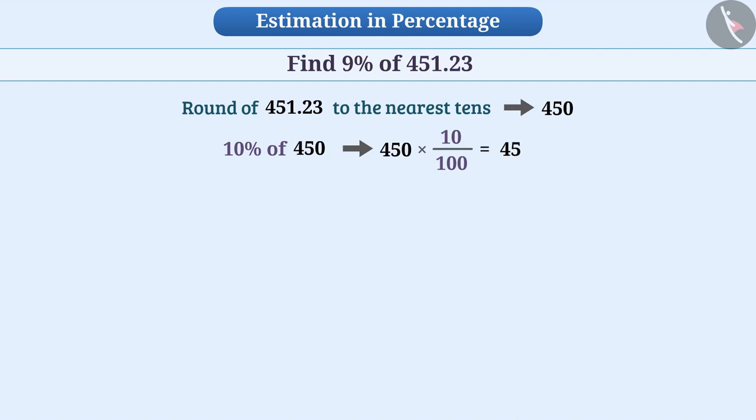Similarly, we will get 1% of 450 which will be 4.50, that is 4.5. Now, we will subtract 4.5 from 45.